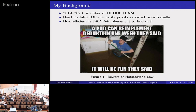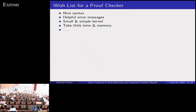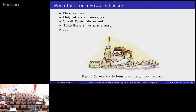Very early in my work I set out to make a wish list. Starting from zero I could do anything: nice syntax, nice error messages, speed, and so on. But I found out relatively soon that there is a fundamental tension between these goals — you can't have your cake and eat it too — so we have to make certain choices about what we want.